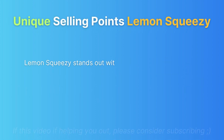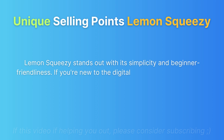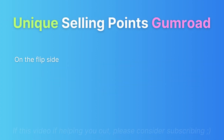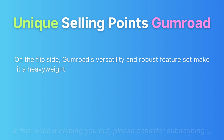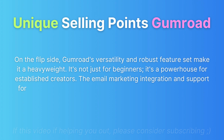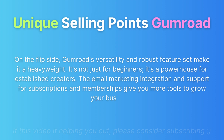Unique selling points of Lemon Squeezy: It stands out with its simplicity and beginner-friendliness. If you're new to the digital product game and want a straightforward platform to sell your creations, it's a fantastic choice. Unique selling points of Gumroad: On the flip side, Gumroad's versatility and robust features make it a heavyweight. It's not just for beginners — it's a powerhouse for established creators. The email marketing integration and support for subscriptions and memberships give you more tools to grow your business.